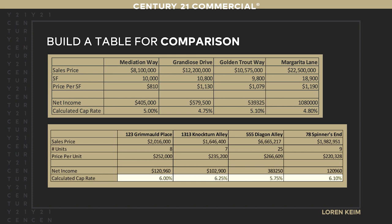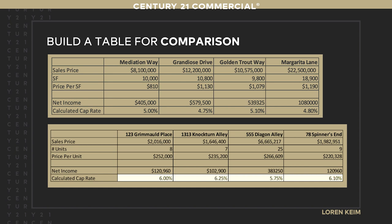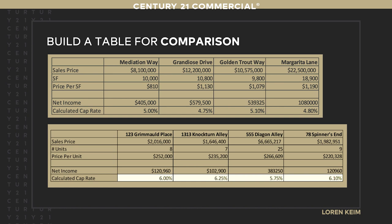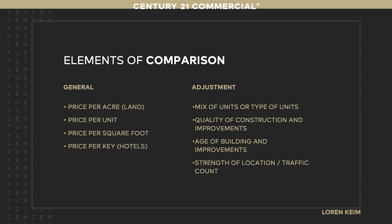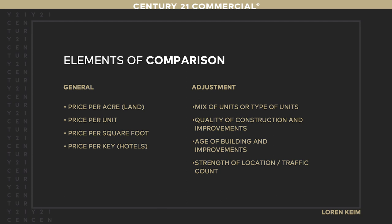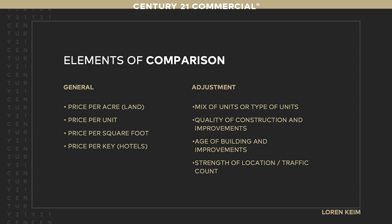Once you have comps, you need to figure out how you're coming up with a price using the sales comparison approach. You've got to find what's most important and build a table. For land I'm going to figure out price per square foot; for multifamily, price per unit — though I prefer income-based valuation since landlord costs vary. Price per square foot for office, warehouse, or similar; price per key for hotels. And then adjust by mix of unit type, quality of construction, age of building, and strength of location.